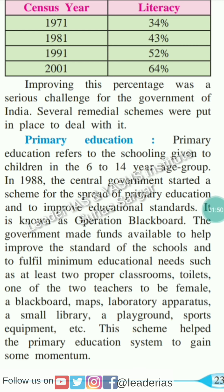Priority was given to schooling for children in the 6 to 14 years of age group. In 1988, the central government started a scheme for the spread of primary education and to improve educational standards. It is known as Operation Blackboard.